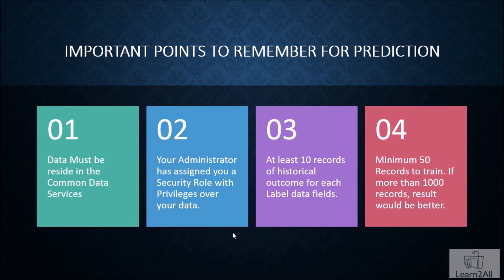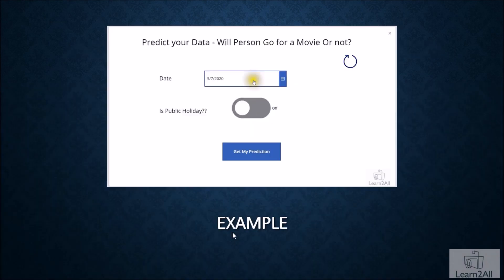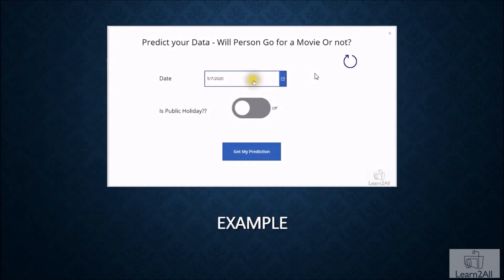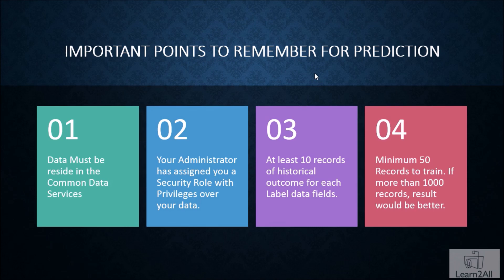Third, you should have at least 10 records of historical outcome for each label data field. What do you mean by this term? Here I have shown you this example. You can see that we have different labels. For example, 'go for a movie' outcome has three values: one, two, and three. So for each individual label, there should be 10 historical data records. It doesn't mean that if you have an outcome with only five sample records, it should have minimum 10 records for each individual label data field.